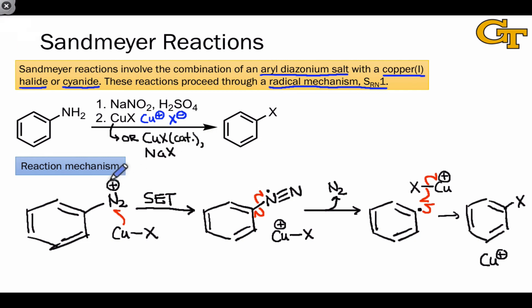On the whole, if we focus on what's happened in this reaction, the N2+ group has been replaced with a good nucleophile, X-. And this X group in Sandmeyer reactions can be bromine, chlorine, or cyanide.